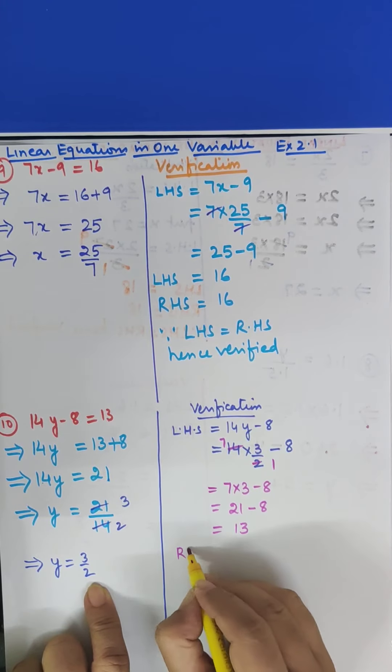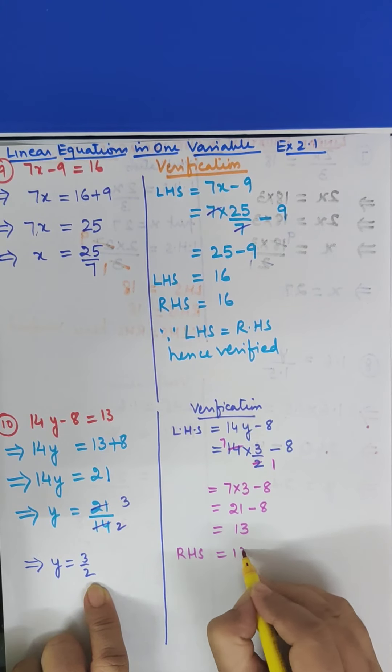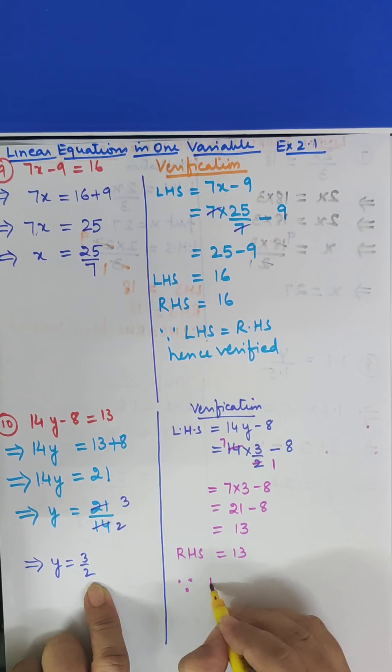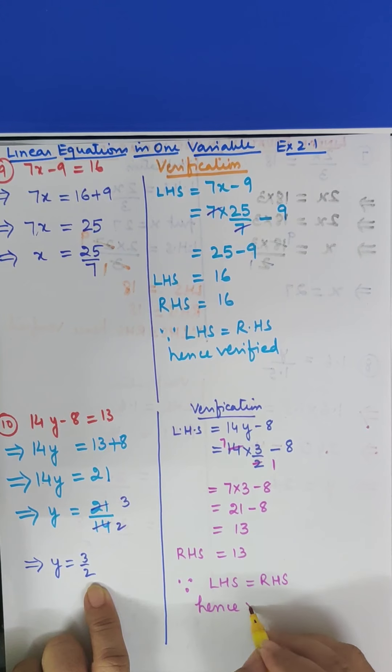RHS is also 13. So write here, RHS is equal to 13. Since LHS is equal to RHS. Hence, verified.